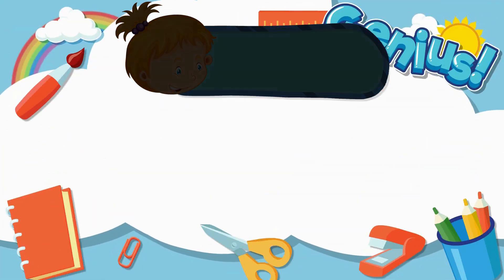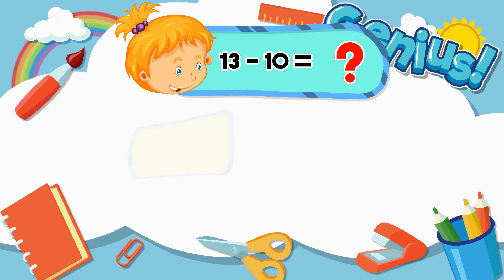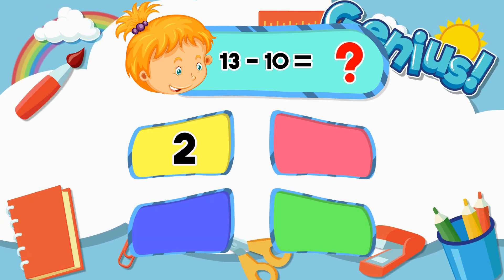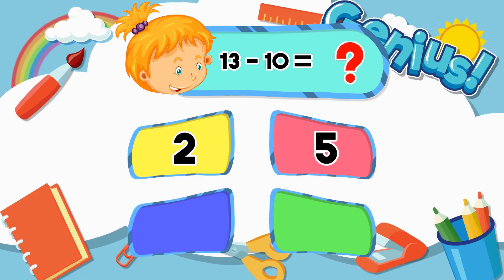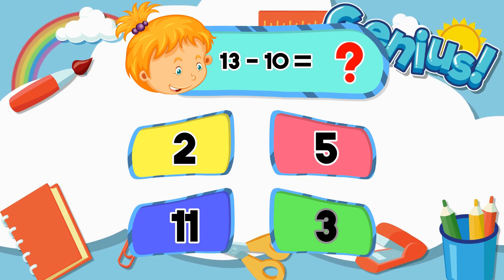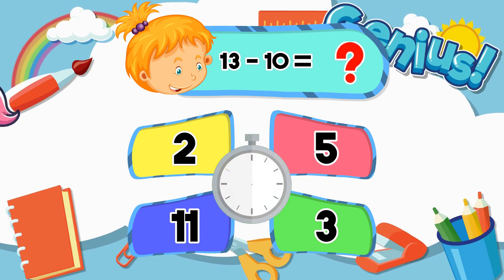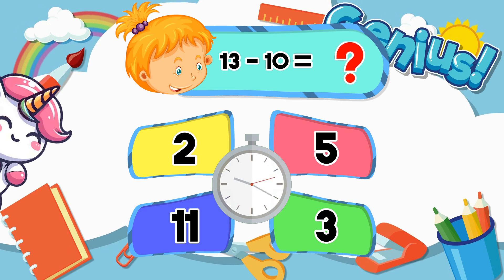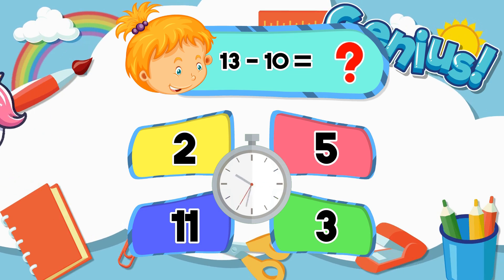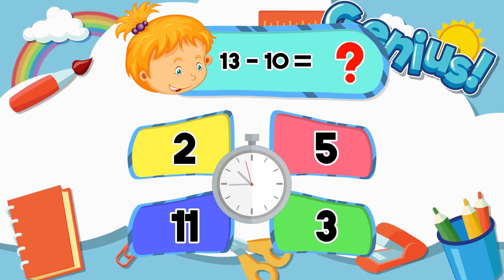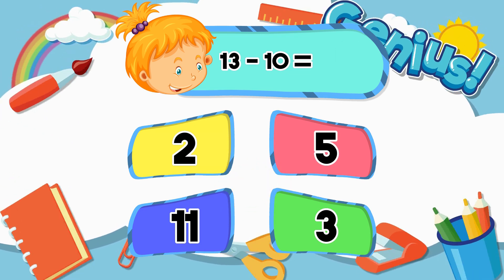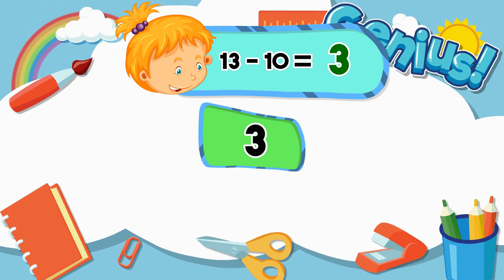What is 13 minus 10? Options: 2, 5, 11, 3. The answer is 3.